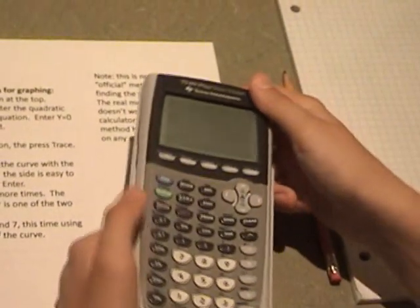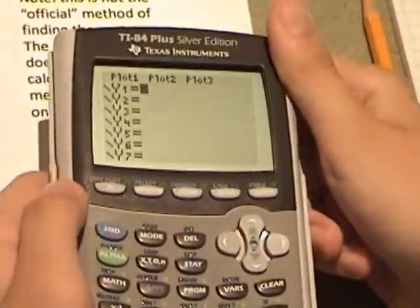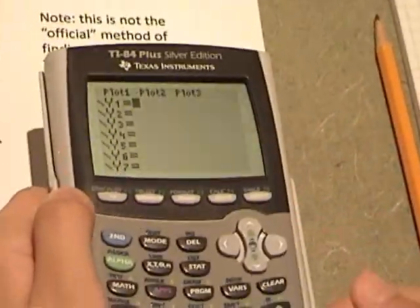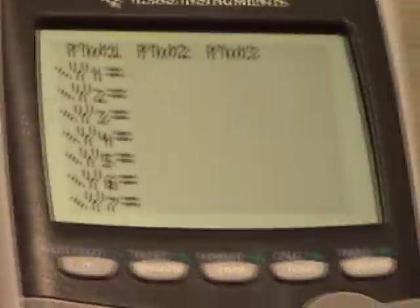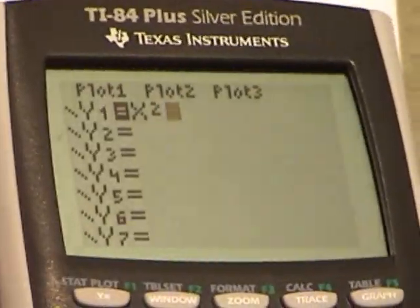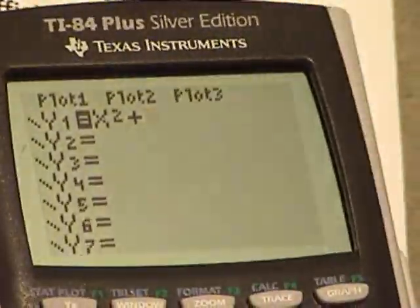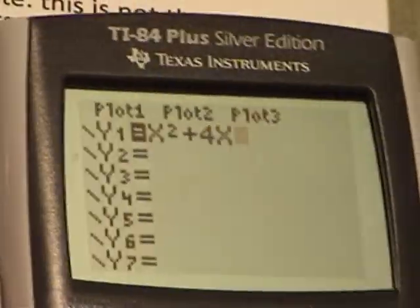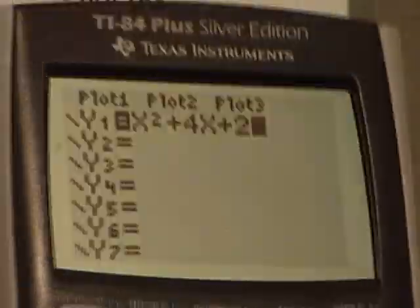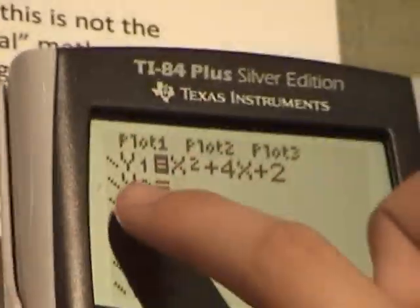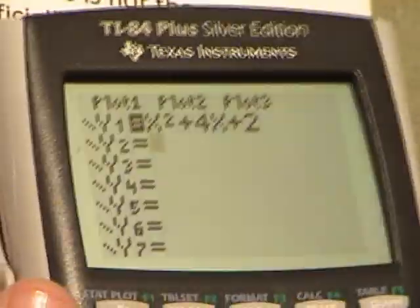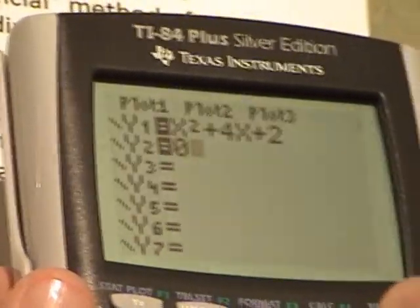Now, press the y equals button at the top. And on that screen, enter the quadratic equation. So, I'm going to pick something like x squared plus 4x plus 2. Then, on the line below it, enter y equals 0. Then, you graph this. Wait until it's done.